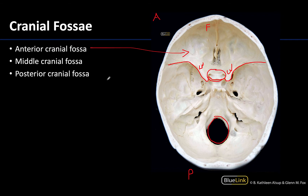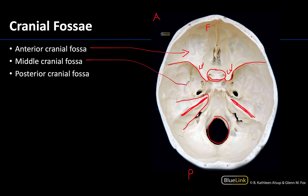The middle cranial fossa extends from the inferior portions of the lesser wings of the sphenoid to the apices of the petrous part of the temporal bone. This whole region here is the petrous portion of the temporal bone, and the apex is the most superior portion of this petrous part. The middle cranial fossa will be between the lesser wings and the apex of the petrous part of the temporal bone. Lastly, the posterior cranial fossa extends from those same apices all the way back to the squamous portion of the occipital bone.